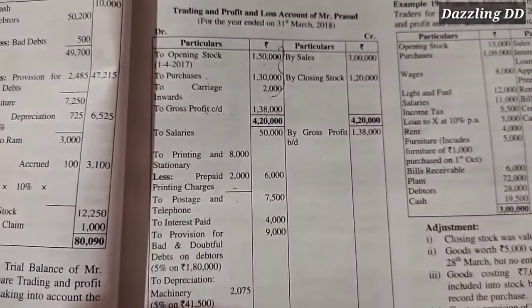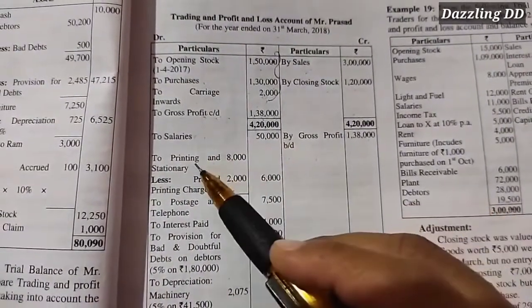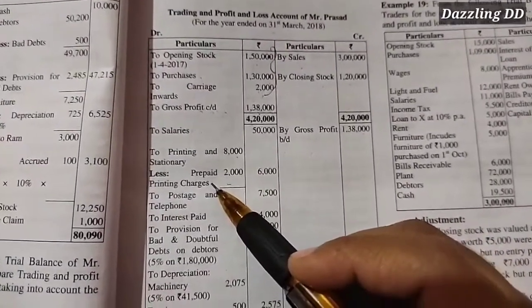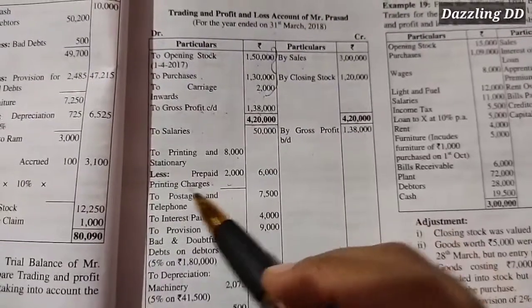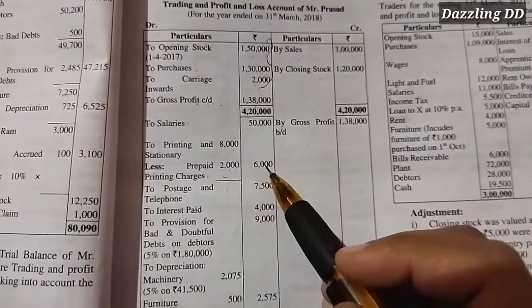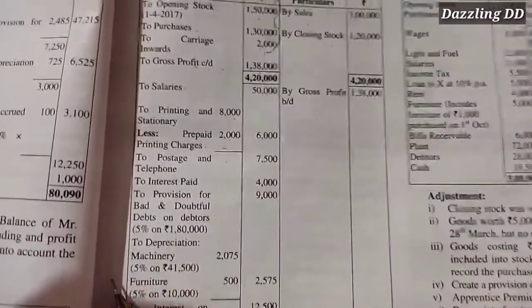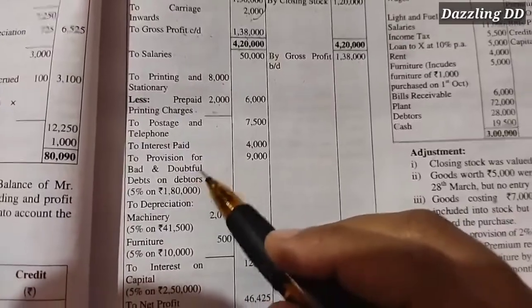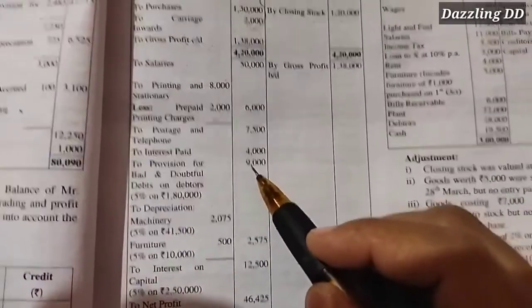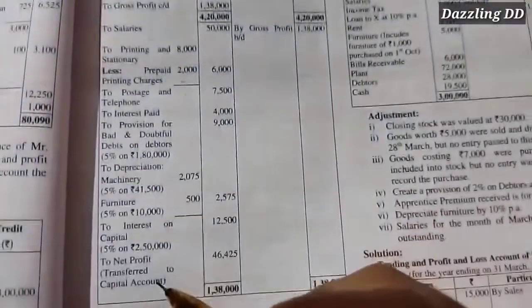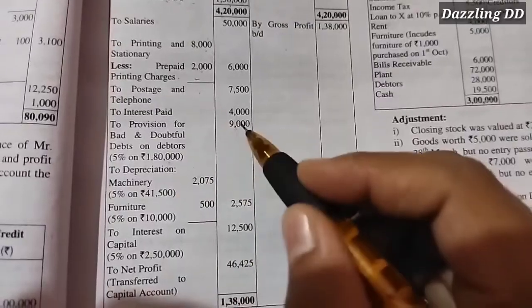On the debit side, item by item: salaries are $50,000. Printing on stationery is $8,000, but prepaid printing charges of $2,000 are already paid, so we minus: $8,000 minus $2,000 equals $6,000. Postage and telephone is $7,500. Interest paid is $4,000. Provision for bad and doubtful debts on debtors: provide 5% for bad and doubtful debts — debtors value is $1,800, so 5% of $1,800 is $9,000.